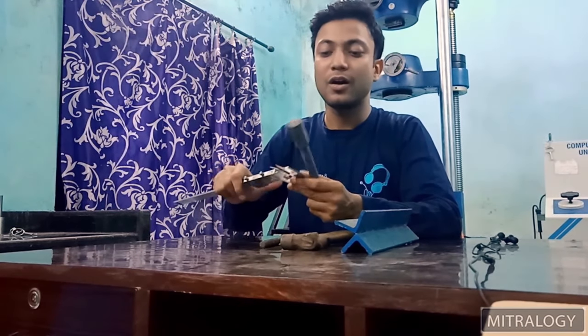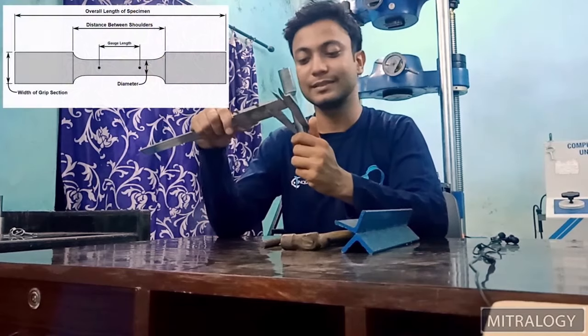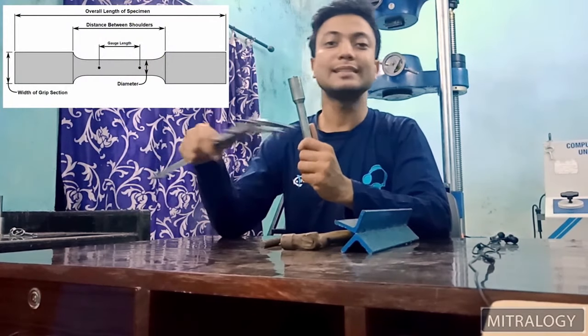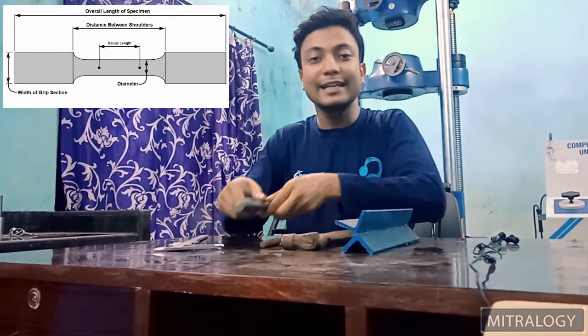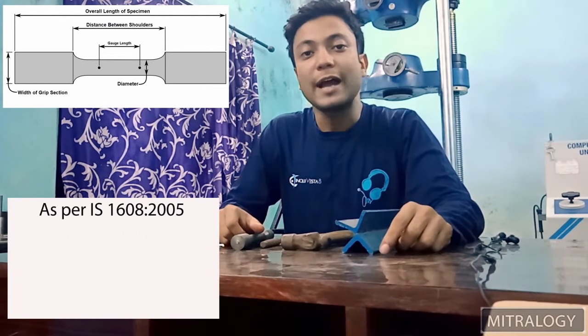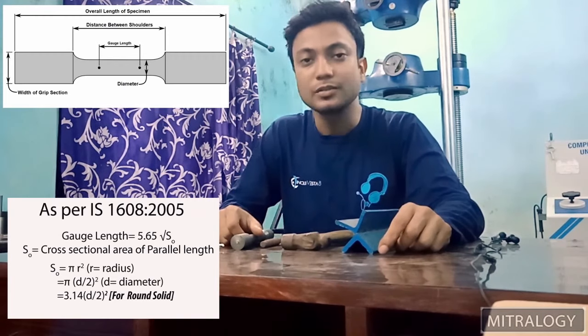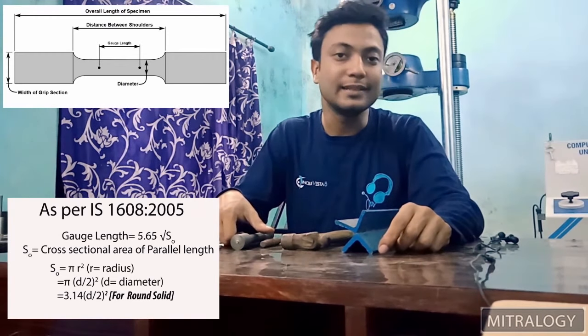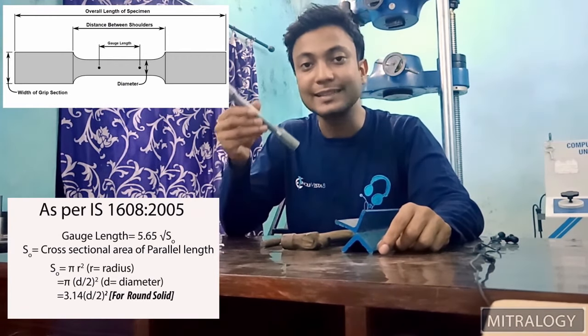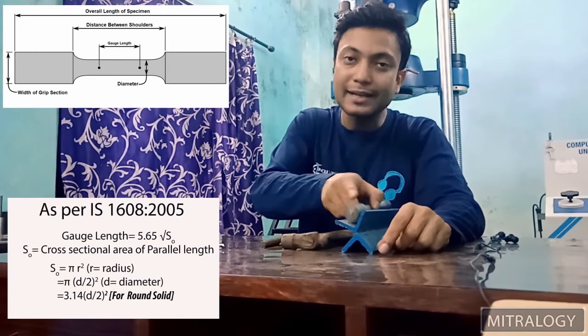This is 16mm. So the gauge length will be 5.65 root over cross sectional area. So it will be 80. So we will take gauge length 80 and mark it.